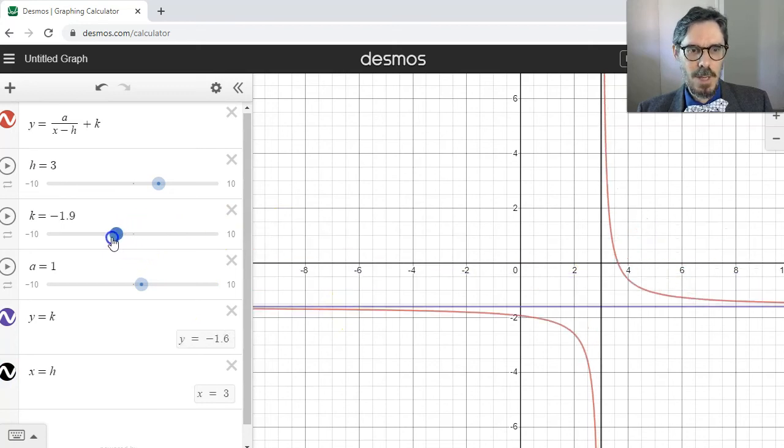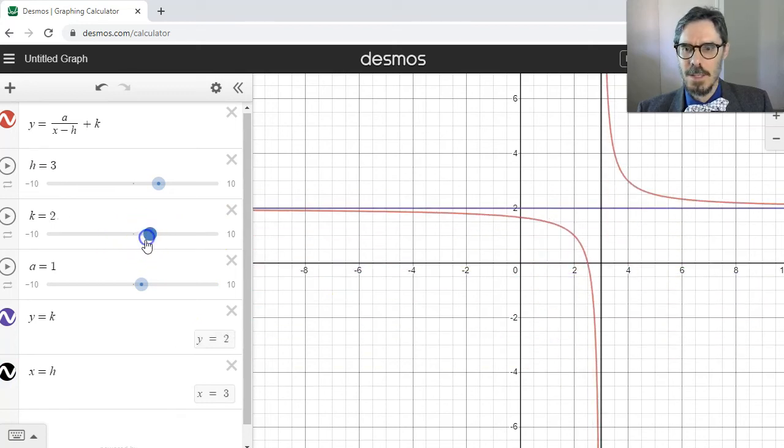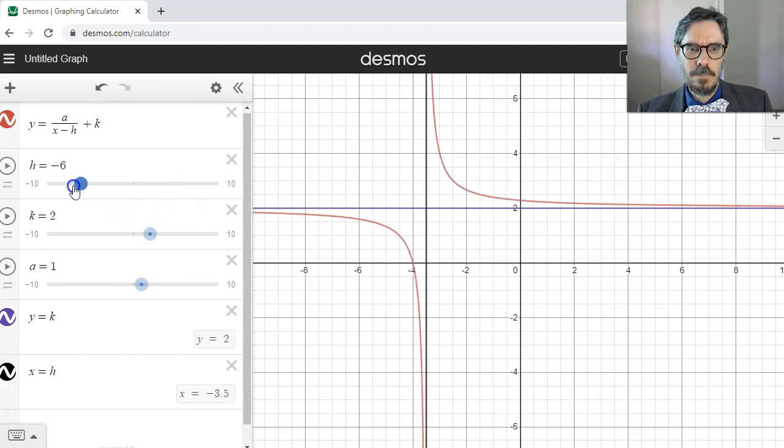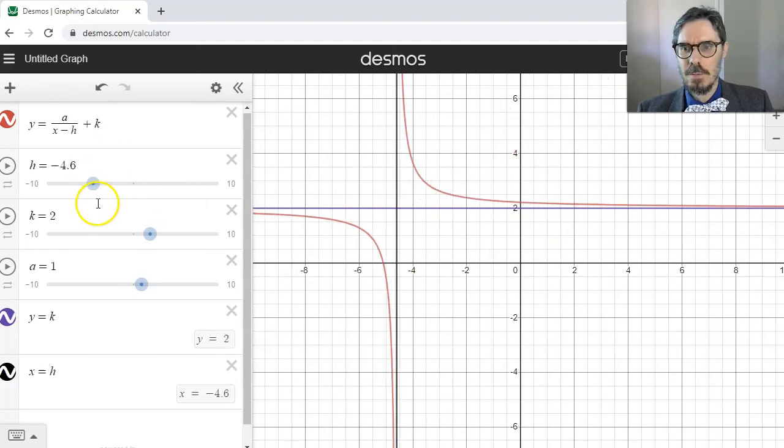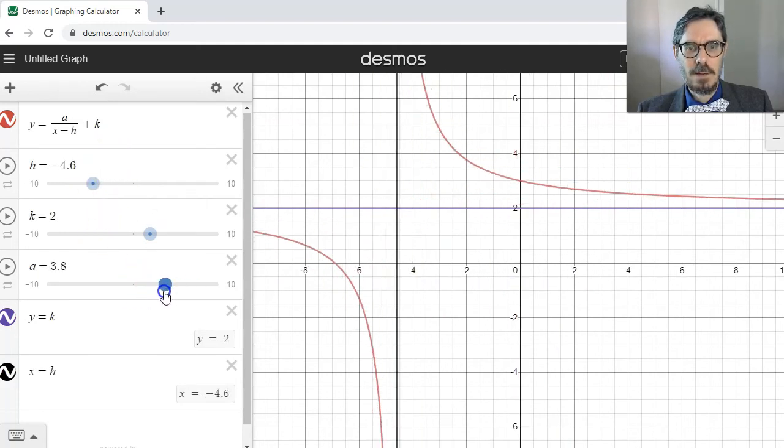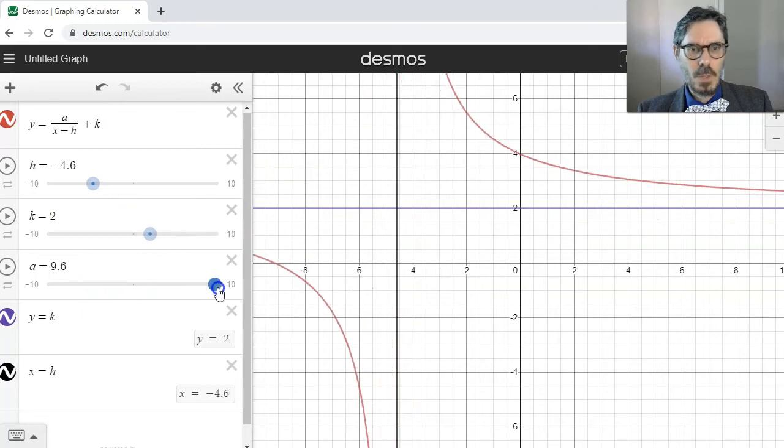So as I move those around, that's where the asymptotes go. And that's true even if I change my scaling factor, positive or negative.